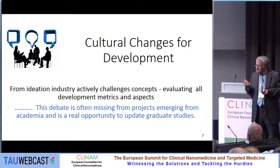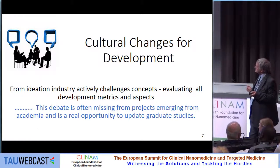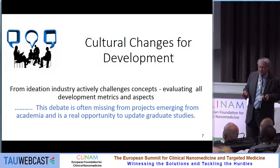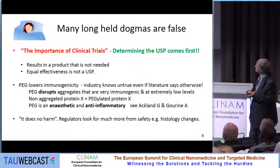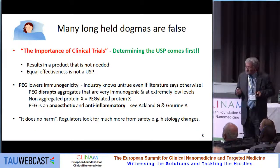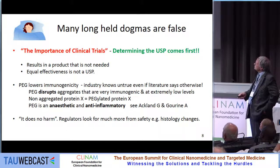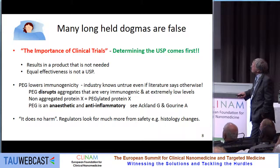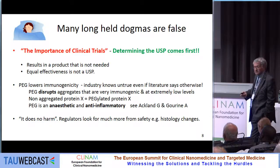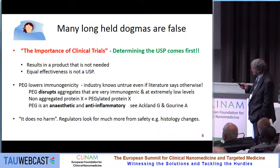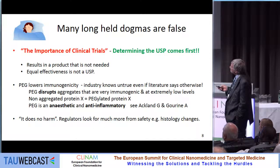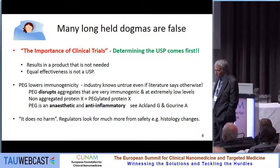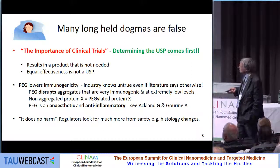It's really important to actively debate the metrics and the advantages and disadvantages as you go through the research phase. Many long-held dogmas are false. One we come across quite often is the importance of clinical trials. I would argue that determining the USP — unique selling proposition — comes before clinical trials. That's not the way people often think about it. The consequence is you get a product that's not needed, and equal effectiveness is not a USP. I've seen cases of successful clinical trials but no means of progressing them towards the market.